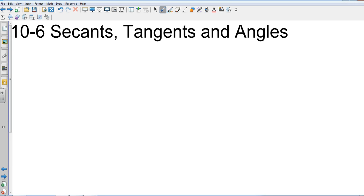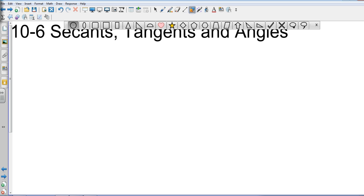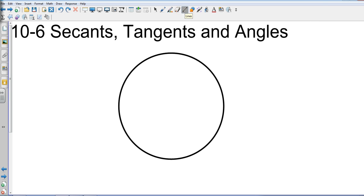So far we've had chords which were drawn on the inside of a circle. We have had tangents that were drawn on the outside of the circle with one intersection point. And so today we're going to study secants. A secant is a line or segment that is drawn through a circle and intersects it twice.